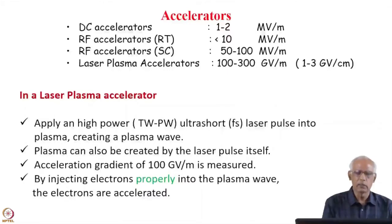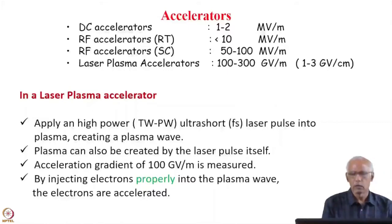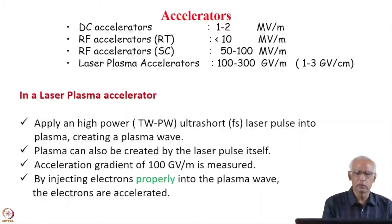These gradients are not enough if you want to go to very high energies, and therefore new technology has to be developed. One such technology is laser plasma accelerator technology, where accelerating gradients of 100 to 300 GV per meter are achievable. In fact, in experiments, 100 gigavolts per meter has been measured and achieved.